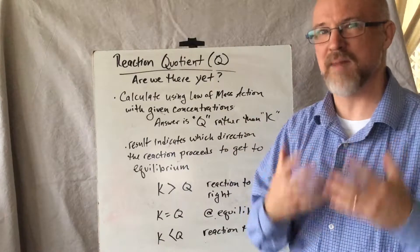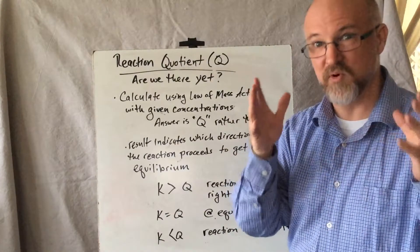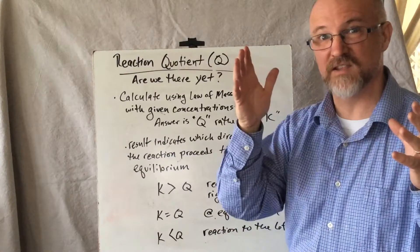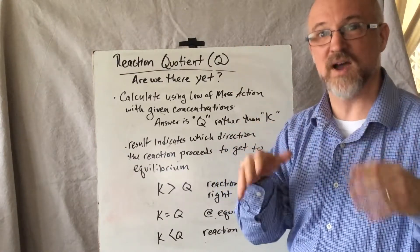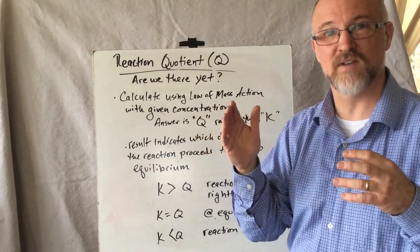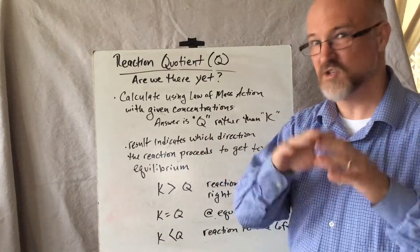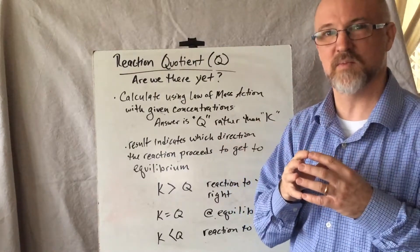Okay, so we're doing the same math. We're applying the law of mass action. The products raised to the exponential value of their coefficients divided by the reactants raised to their exponential value of their coefficients. We're doing the same math, the same calculation, plugging concentrations in the same place and getting an answer.